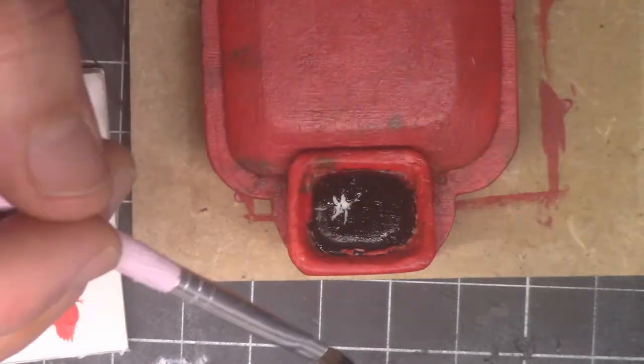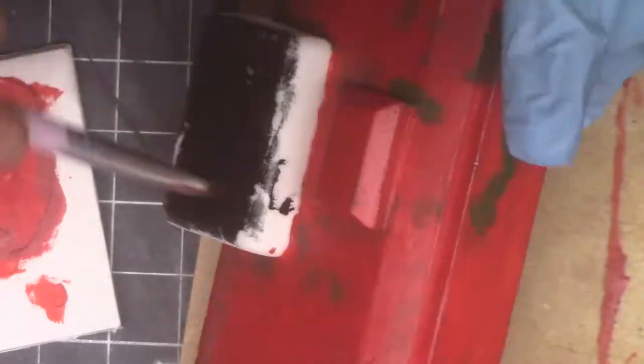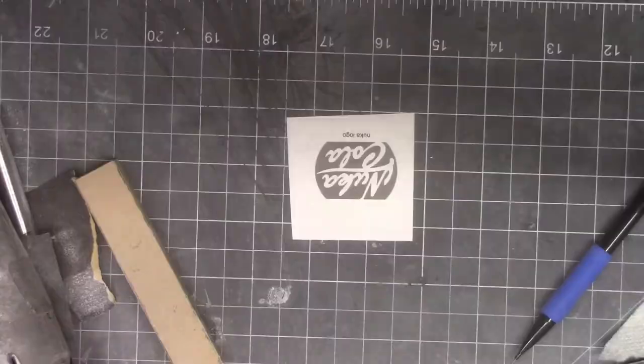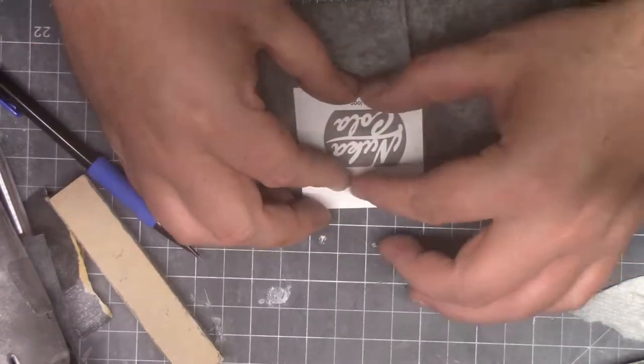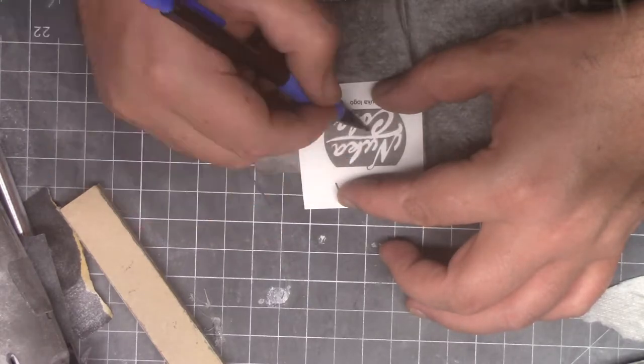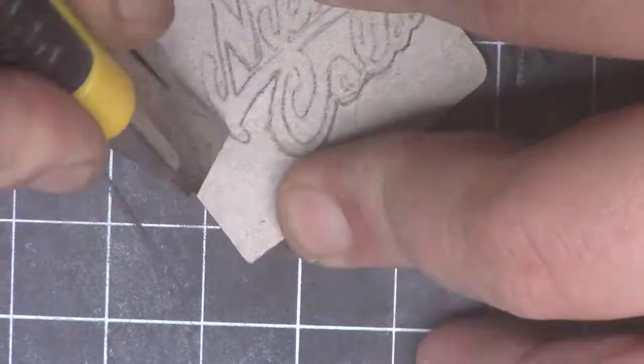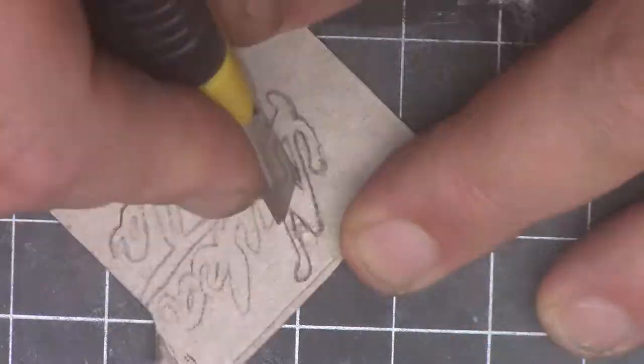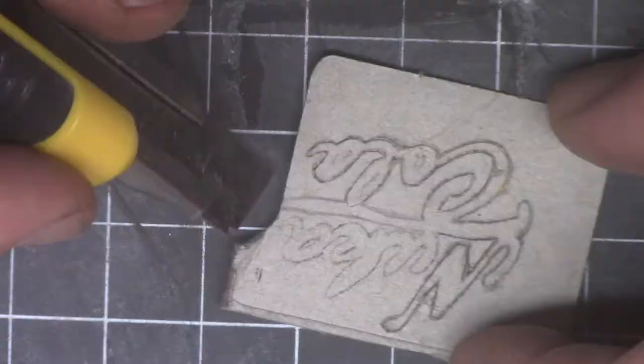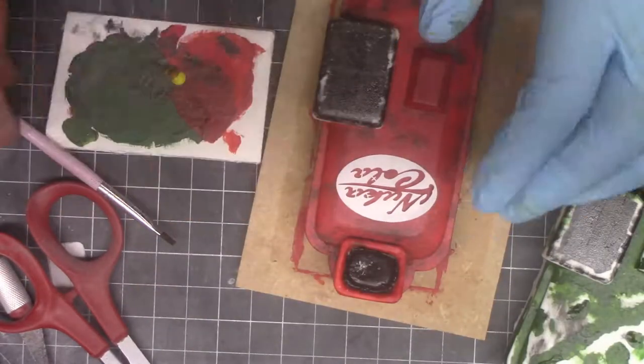So I printed out a Nuka Cola logo and transferred it into some thin cardboard to try and make a stencil, but because it was so small and delicate it kept ripping. So before I burned my house down in frustration, I talked my wife into buying something that we couldn't afford, and that was a Cricut die cutting machine so that I could just have the machine cut the stencil for me. It worked like a charm and I didn't even have to light anything on fire.